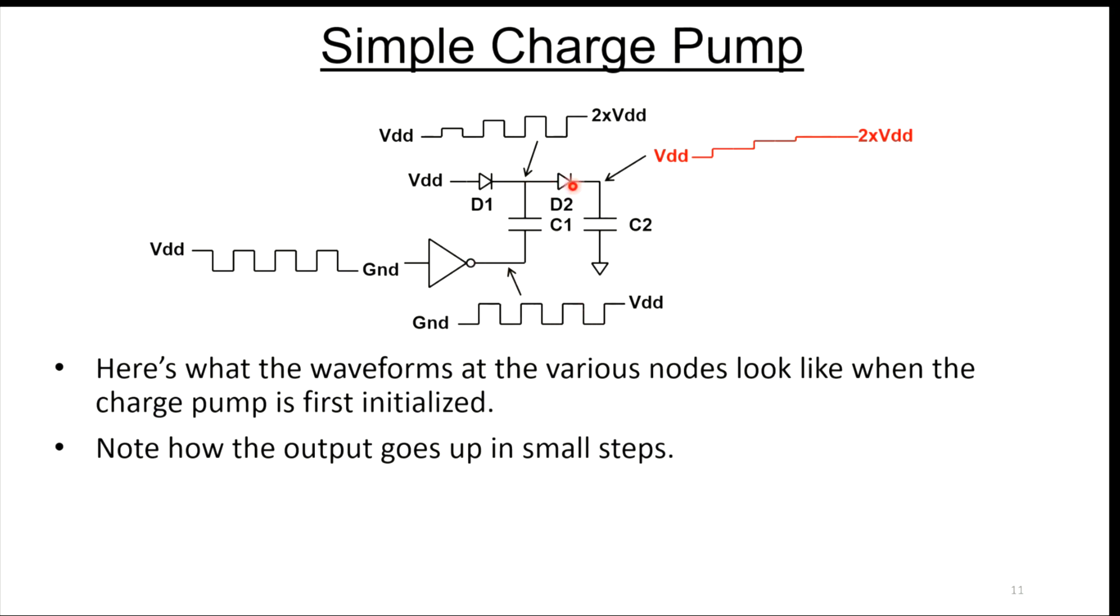It starts sharing that charge with C2. At the beginning, you don't quite get the full rise at this node. But after a couple of clock cycles, C2 gets pumped all the way up to 2x VDD. And now V1 will follow and also go up to 2x VDD on every clock cycle.